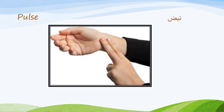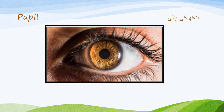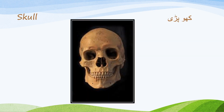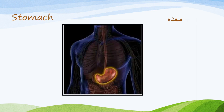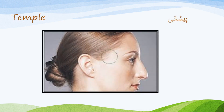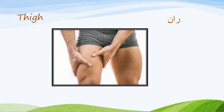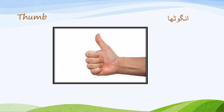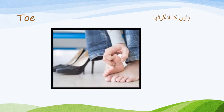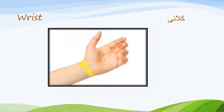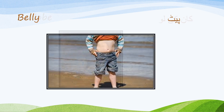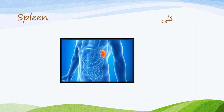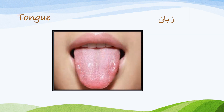Pulse — Nubs. Pupil — Aankhi Putli. Shoulder — Tanday. Skin — Jil. Skull — Hopdi. Stomach — Meda. Temple — Pishani. Throat — Thalak. Thumb — Anggutha. Toe — Pawn ka Anggutha. Waist — Kamar. Wrist — Kali. Belly pit. Earlobe — Kaan Kilo. Hand. Heart. Spleen — Tilly. Tongue — Zuban.